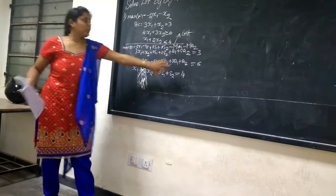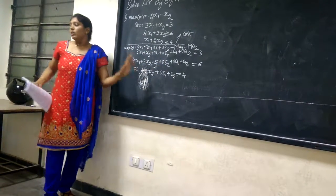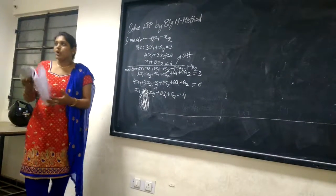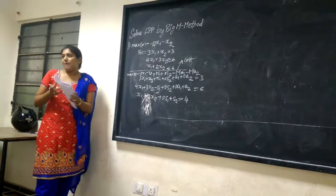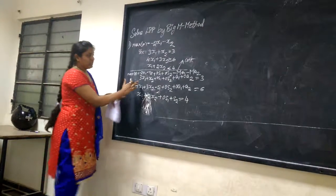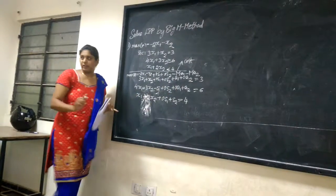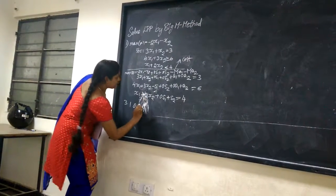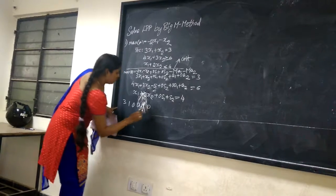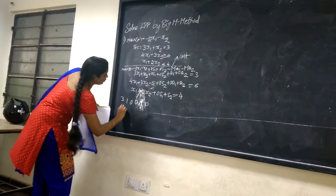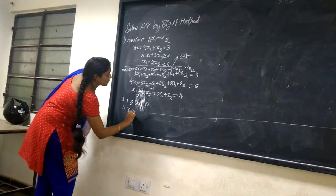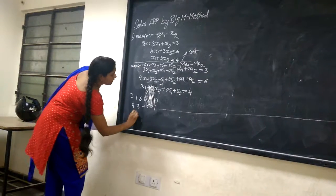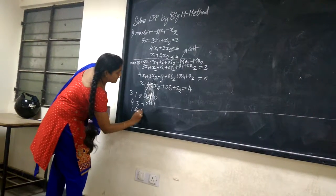We converted the inequalities into equations by adding surplus variables and artificial variables. Now we form a matrix using the coefficients. That matrix will be: Row 1 — 3, 1, 0, 0, 1, 0; Row 2 — 4, 3, −1, 0, 0, 1; Row 3 — 1, 2, 0, 1, 0, 0. The right-hand side constraint values are 3, 6, and 4.